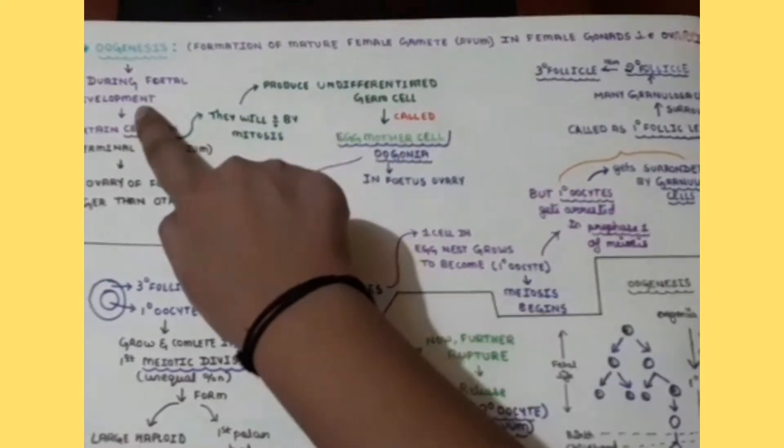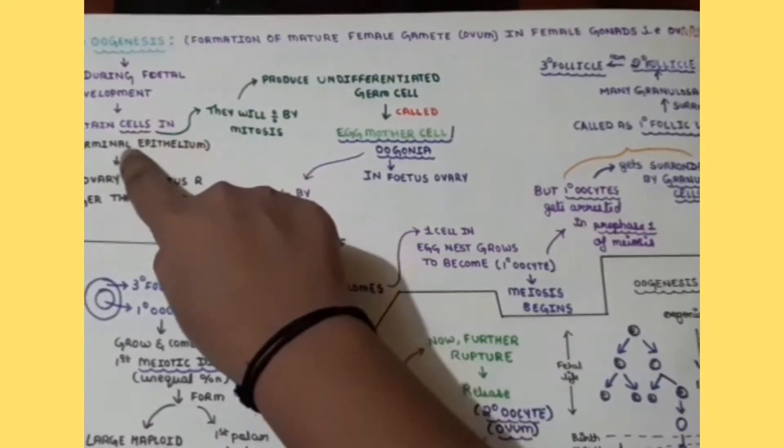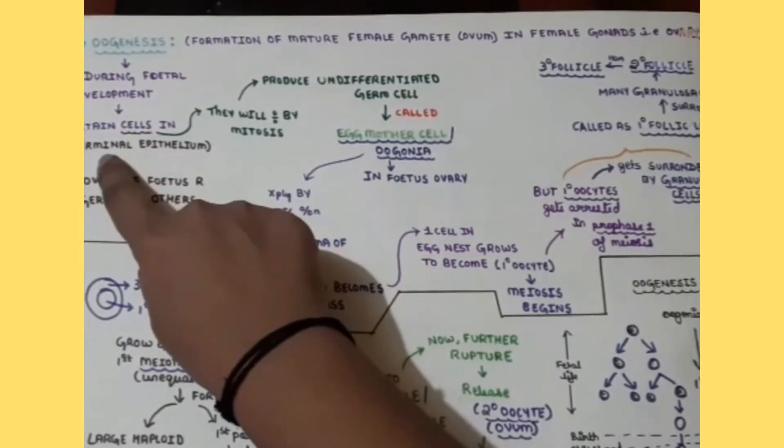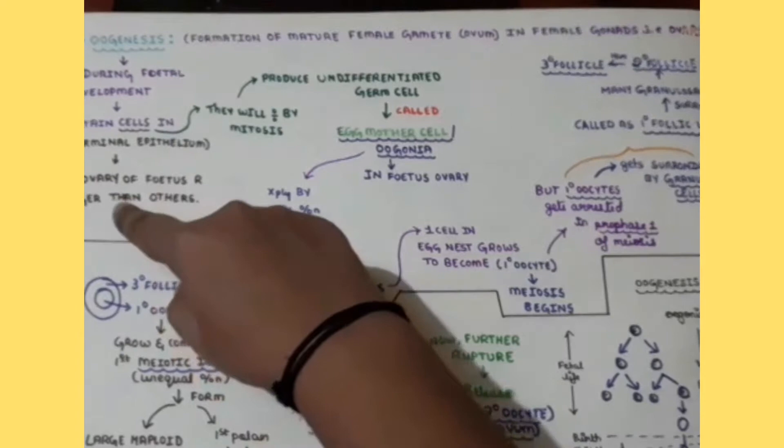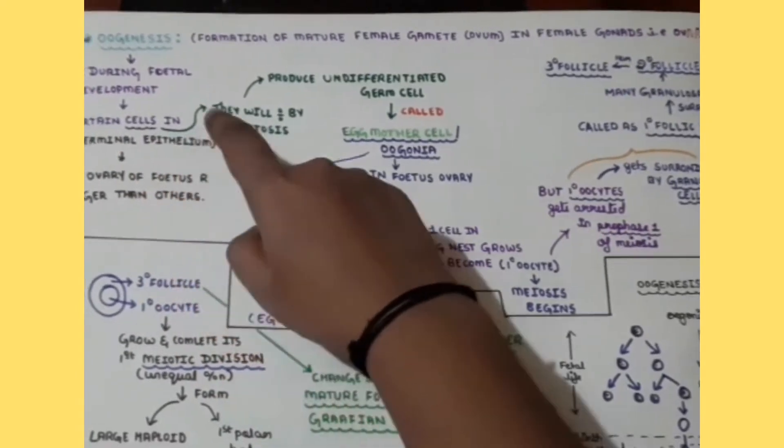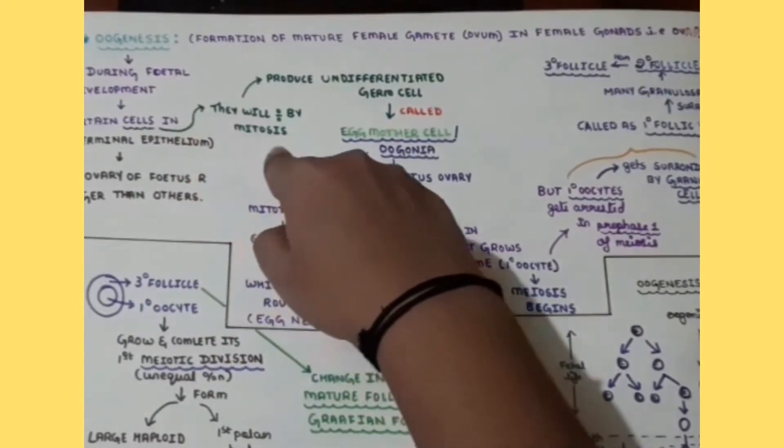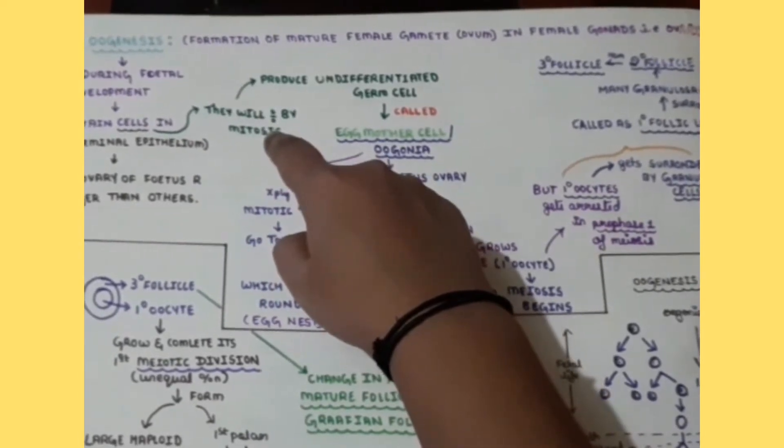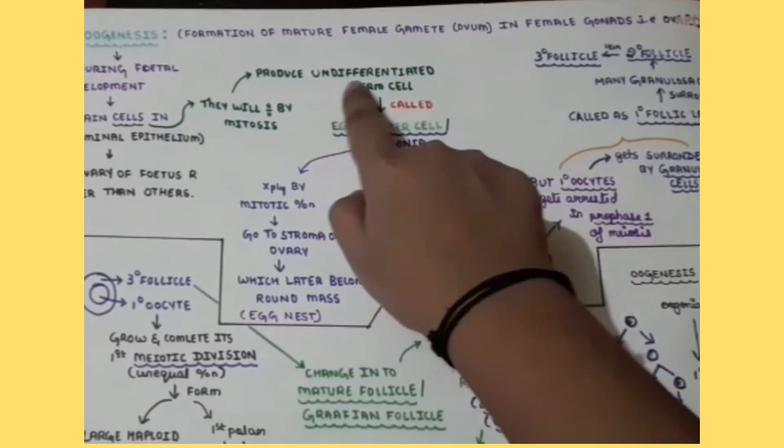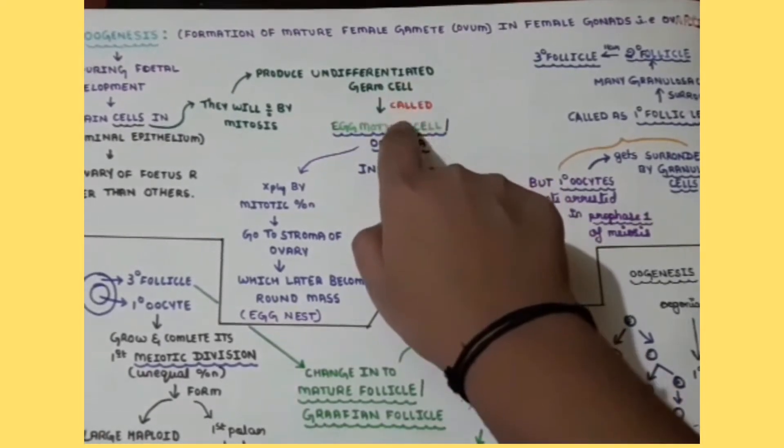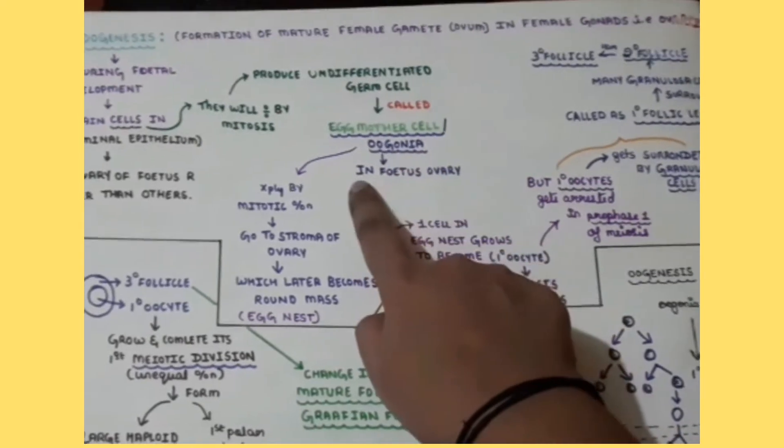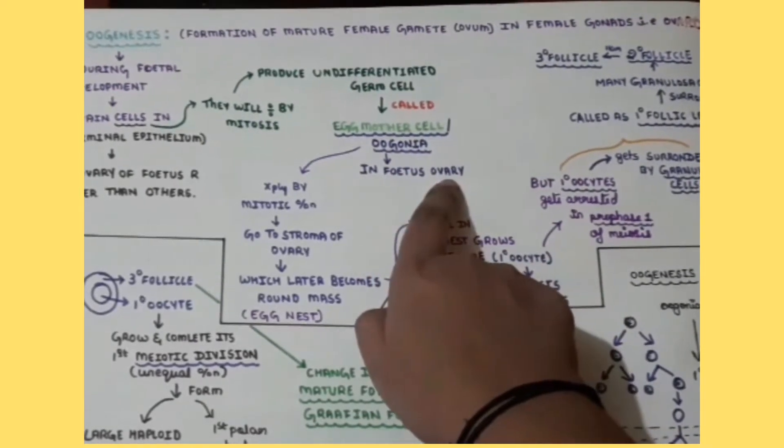So during the fetal development, there are certain cells inside the germinal epithelium inside the ovary of the fetus which are larger in size and these cells will undergo division that is by mitosis process. It will produce undifferentiated germ cells that are called as egg mother cells or oogonia in the fetus ovary.